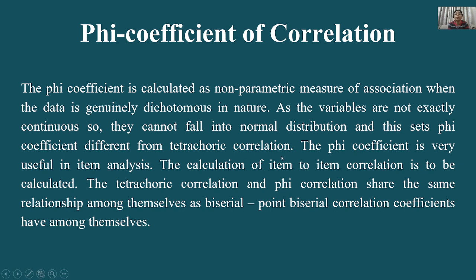As the variables are not exactly continuous, they cannot fall into normal distribution. जो phi coefficient का data है, उसका variable normal distribution को follow नहीं करता। And this sets phi coefficient different from tetrachoric correlation. यही phi coefficient और tetrachoric correlation के बीच का अंतर है।